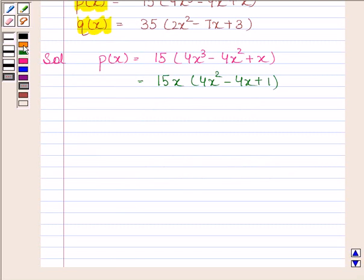We can write 15 as 3 into 5. So we have 3 into 5 into x. Now we will factorize this by splitting the middle term. So we get 4x squared minus 2x minus 2x plus 1.